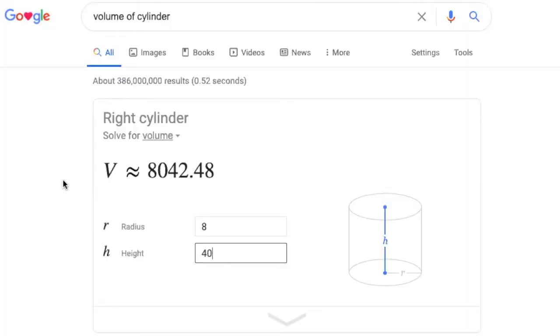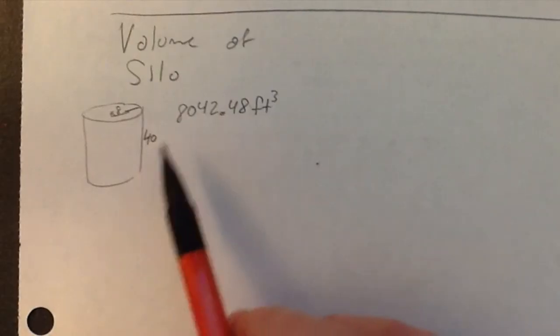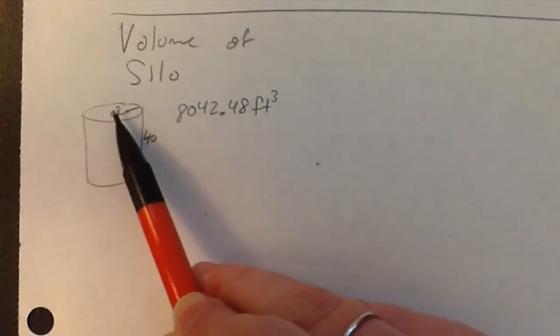So now we know that the cylinder portion of the silo is 8042-ish.